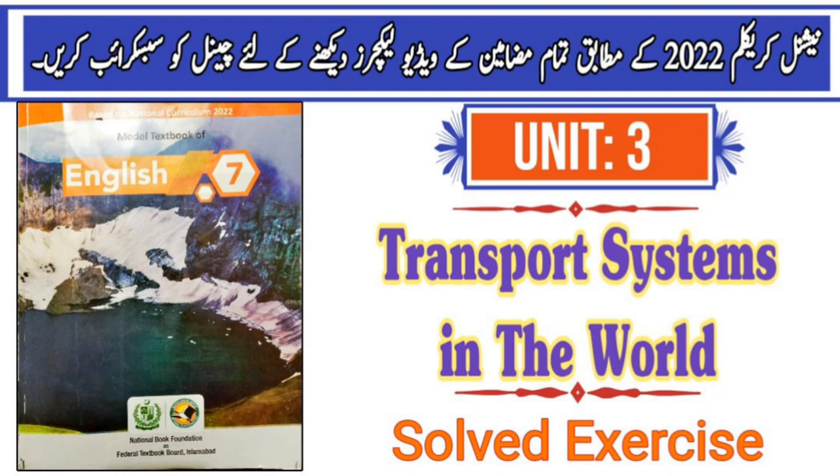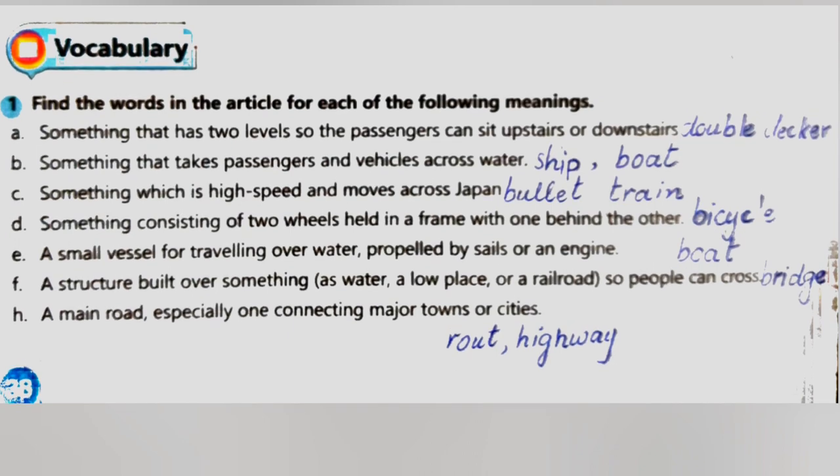Page 38. Find the words in the article for each of the following meanings. We have some statements that tell us what meaning is required. Number 1: something that has two levels so the passengers can sit upstairs or downstairs. The answer is double-decker.